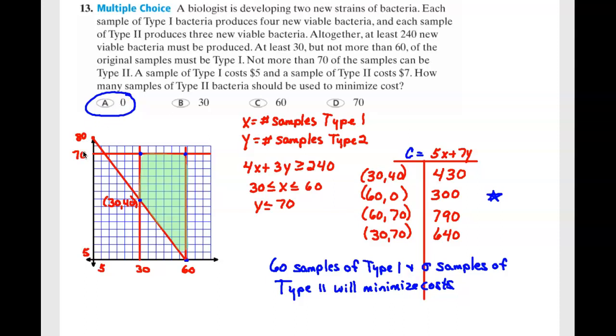So we put 70 for type 2 because we cannot have more than 70. We need 30 to 60, which are these two lines for type 1. And then our cost function is going to use the 5x and the 7y. And we have one other function, which is the 240. So that's where the 4x and the 3y come in. So you have 4x plus 3y greater than or equal to 240.